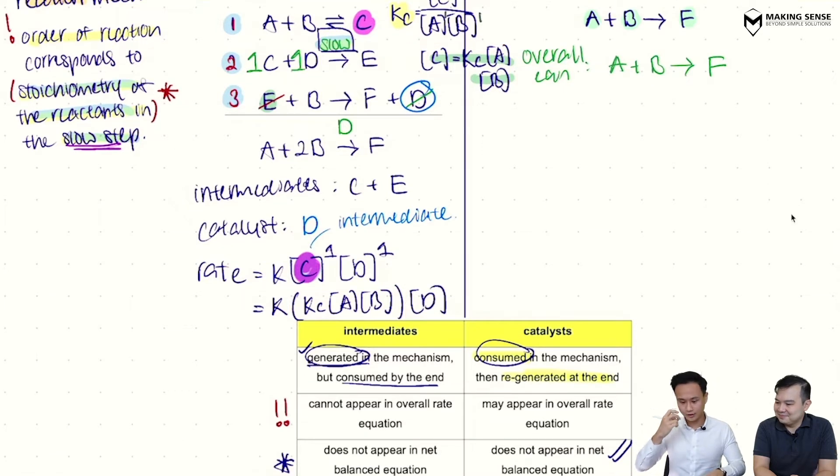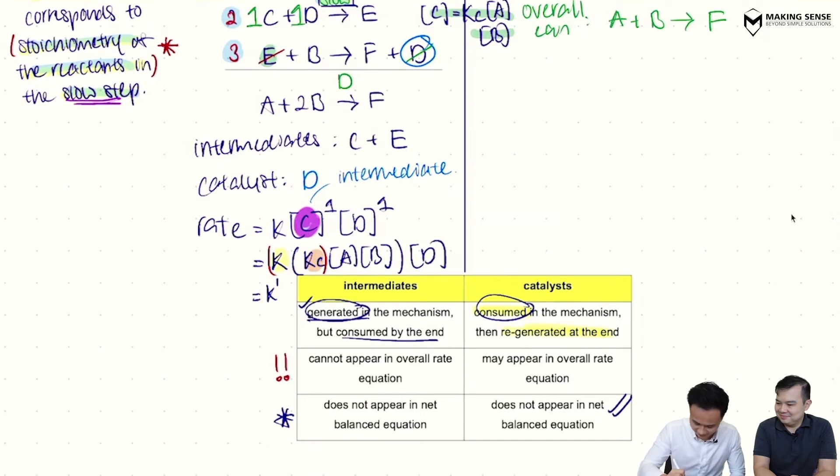And can you show us how you're going to replace it in? Yeah, sure. So I've just made C the subject. So we're going to put the whole thing in now. So this is equal to K bracket KC times A multiplied by B close bracket times D. Now, here's the thing. You would see that since K, the small k here, which is a rate constant, and KC is also an equilibrium constant. They're both constants. So I can always group my constants together, and I'm going to rebrand this, and I'll call this K prime.